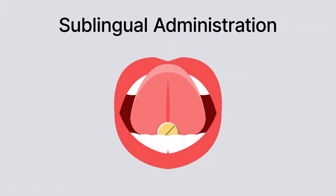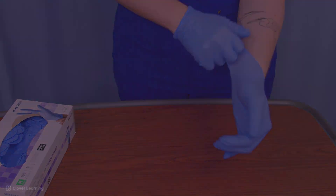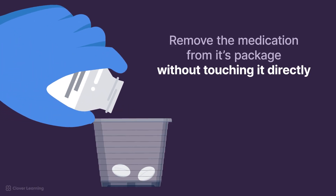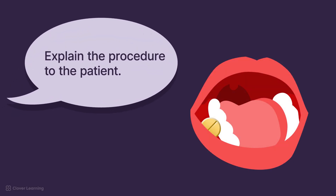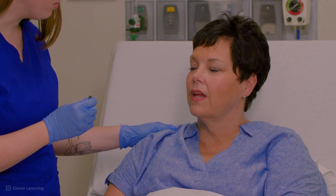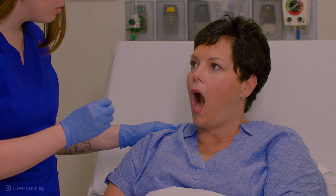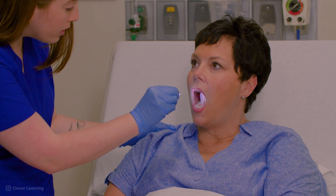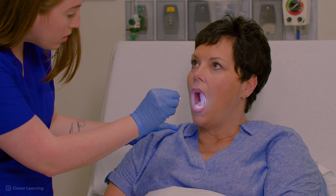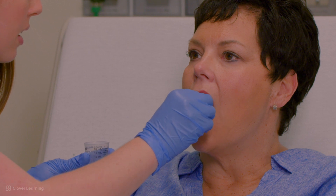For sublingual administration, you will follow the same preparation processes as before. Be sure to wear gloves. Wearing gloves, remove the medication from its package without touching it directly. Explain the procedure to the patient, including how the medication should be placed in the mouth. Do a quick physical assessment of the sublingual area beneath the patient's tongue. Check for sores, inflammation, or any condition that might affect medication absorption. Explain the importance of not swallowing the medication immediately. Ask the patient to lift their tongue, place the medication under the tongue, and instruct the patient to allow it to dissolve completely without chewing.